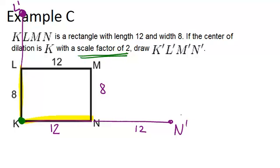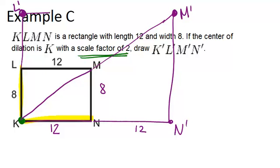To get M, we could just go 16 up, because we know that the result has to be a rectangle again. Or, we could take this length and double it, and figure out where M prime has to go, and connect to get our resulting rectangle.